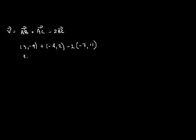So that's (3, -9) added to (-4, 2). And then we subtract. And now I'm going to multiply this 2 in this way. This scalar multiplies the components of this vector, so we have (-14, 22).